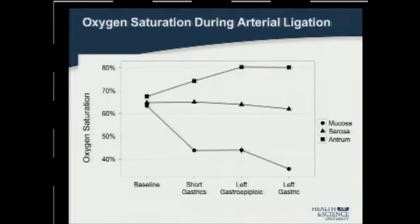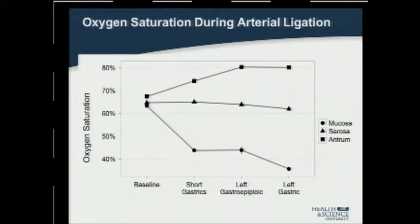In this graph, you can see oxygen saturation at baseline is essentially equivalent at each location. However, with sequential ligations, these measurements diverge. Ultimately, what we found was a significant decrease in oxygen saturation at the mucosal surface, an increase in saturation at the antrum, and oxygen saturation at the serosal surface of the fundus is relatively preserved.